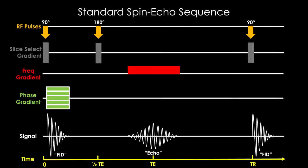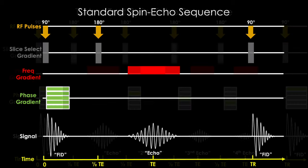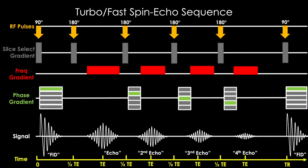So then we got creative and set out to make this process faster, developing what we call the turbo or fast spin echo sequence, where we made a train of echoes allowing us to increase the efficiency of this process, cutting down on imaging time while maintaining the diagnostic quality of our images.